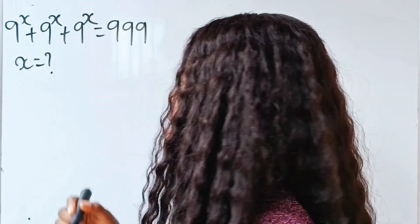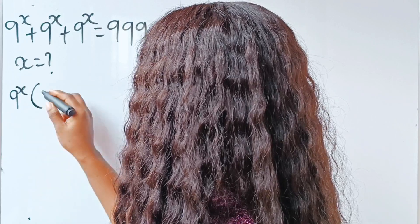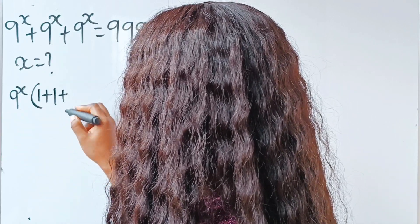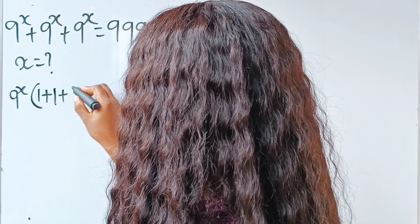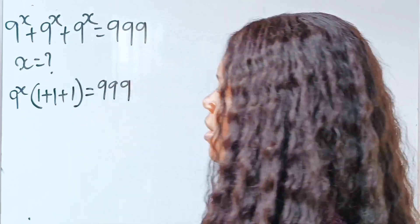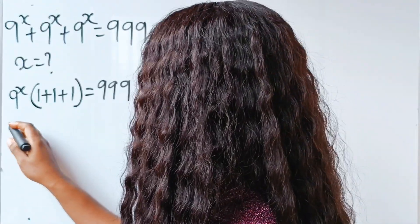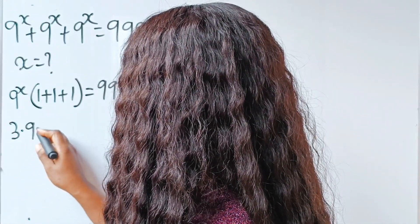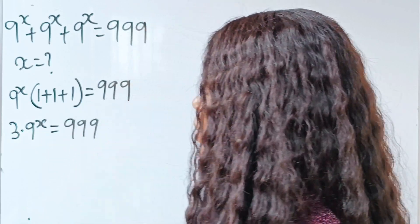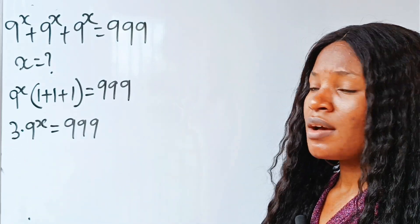So let's factorize that out. We are going to bring out 9 to the power of x. When each term is divided by 9^x, we have 1 each time, giving us 1 + 1 + 1, which equals 3. So this is the same as 3 multiplied by 9 to the power of x is equal to 999.